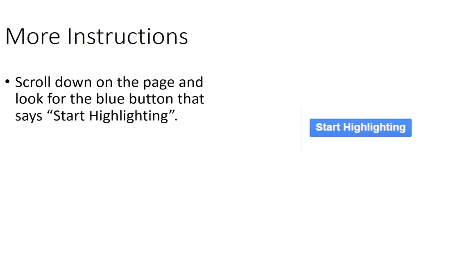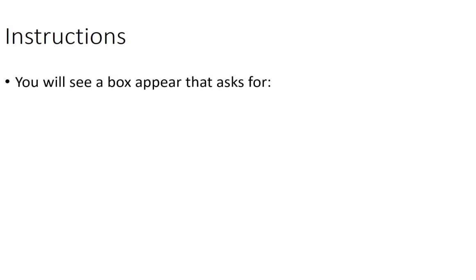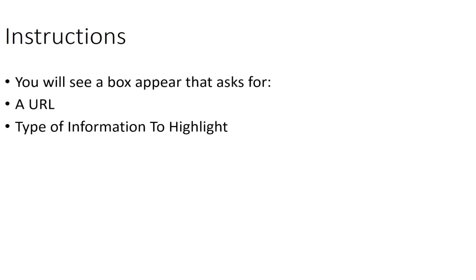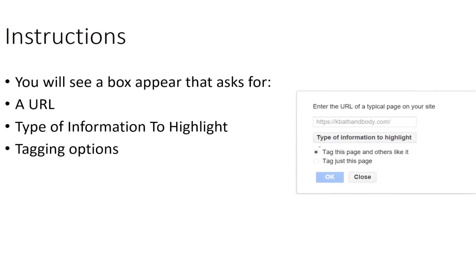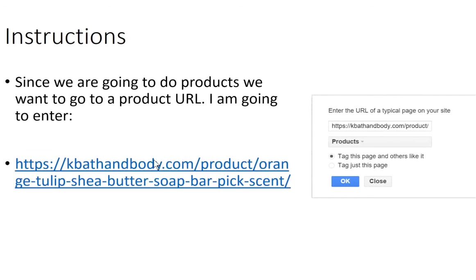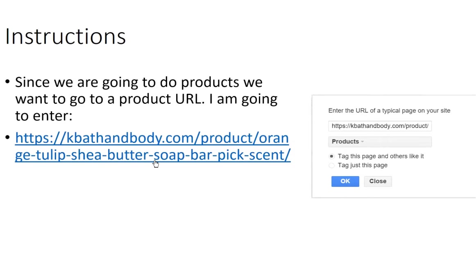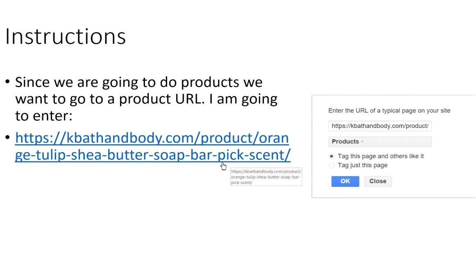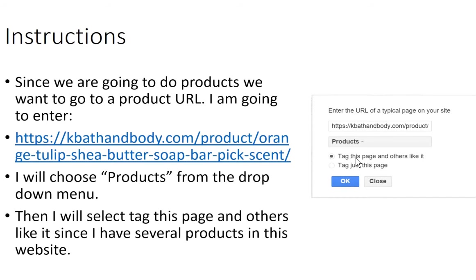Scroll down on that page after you load it up and look for the blue button that says Start Highlighting. You'll see a box appear that asks for a URL, a type of information to highlight, and a tagging option. Since we're going to do products, we want to go to a product URL — a specific page. For this particular one, I'm going to enter kbath and body. The product is an orange tulip shea butter soap bar. I've selected products and for the tag, I'm going to tag this page and others like it, so I could take care of thousands of pages by doing this.